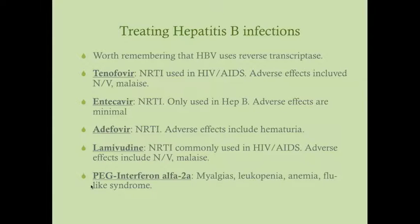Another medication used for hepatitis B is pegylated interferon alpha-2a, or just interferon alpha. Remember that interferon is what your cells release when you have the flu, so the adverse effects are a flu-like syndrome — myalgias, achiness. In some cases leukopenia or anemia can occur, but for the most part the adverse effects are just that flu-like syndrome.